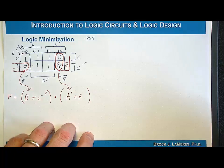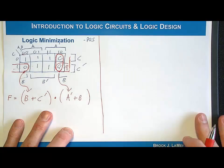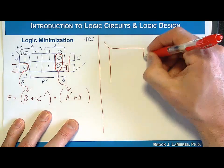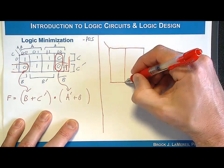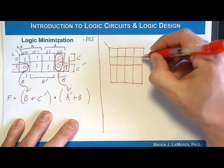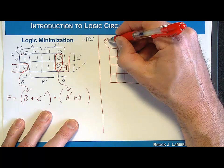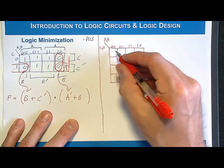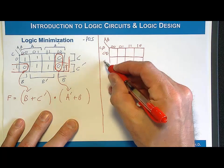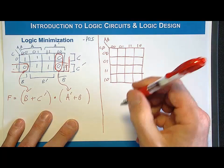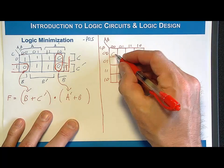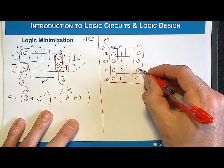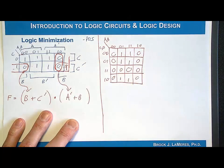Let's do a four-input K-map example with inputs A, B, C, and D. The K-map has 16 cells with Gray code input codes 00, 01, 11, 10 along both axes. The output values are: 0, 0, 0, 0, 1, 1, 1, 0, 0, 0, 0, 0, 1, 1, 1, 0. We want to circle groups of zeros.